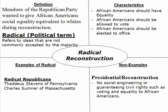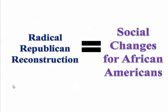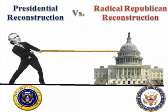Radical Republicans wanted a lot of radical social changes for African Americans: the right to vote, total equality with whites, the right to serve on a jury — none of their rights restricted in any way whatsoever. This fierce battle over who would reconstruct the United States was a tug-of-war between President Andrew Johnson and the Radical Republican Congress and its leaders.